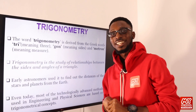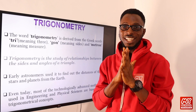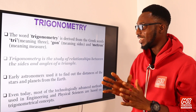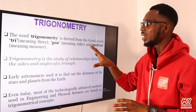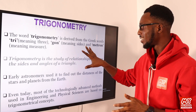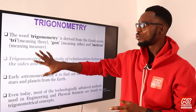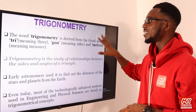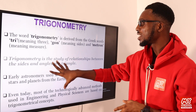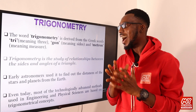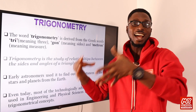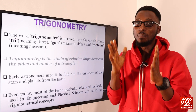Welcome back to my school YouTube channel. We have slides prepared for this presentation. We kick off with the meaning of trigonometry. The word trigonometry is derived from the Greek word 'tri', which means three; 'gon', which means sides; and 'metron', which means measure. So trigonometry is the study of relationships between the sides and the angles of a triangle — its sides, the angles, and the relationships that exist between them.